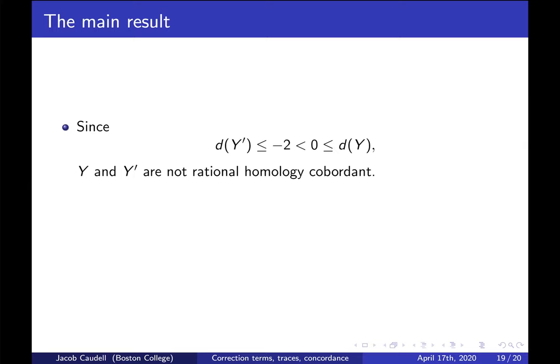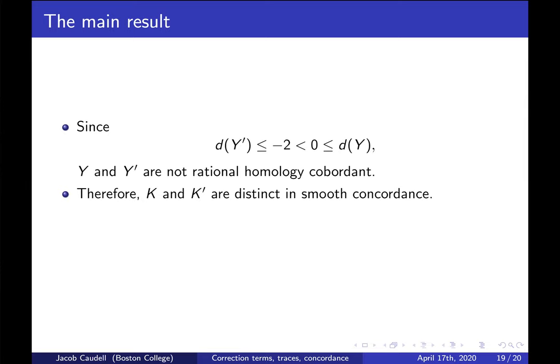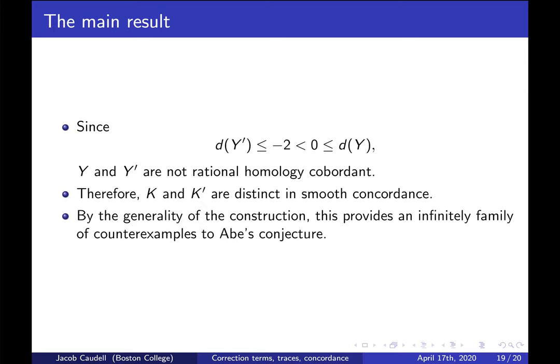Summarizing the main result: d(Y') — the branch double cover of K' — corresponds to a negative number while d(Y) — the branch double cover of K — corresponds to a positive number. We know d(Y') ≤ d(Y₀) = −2 while d(Y₁) = 0 ≤ d(Y). These d-invariants are different, so K and K' are not rationally homology cobordant, and therefore not equivalent in smooth concordance. Since we never fixed little k, by the generality of this construction we get for free an infinite family of counterexamples to the conjecture.